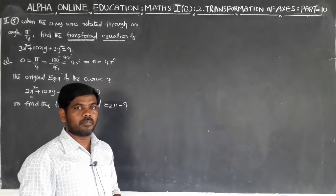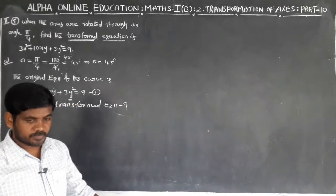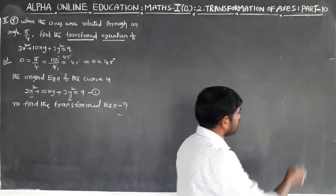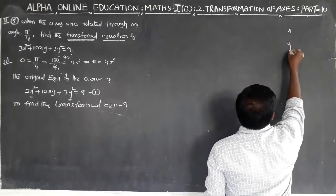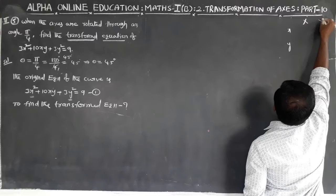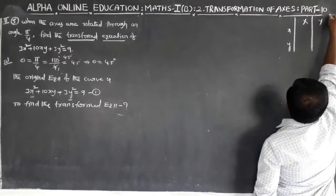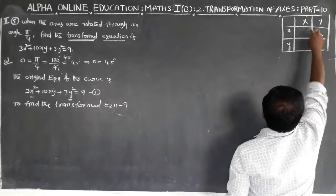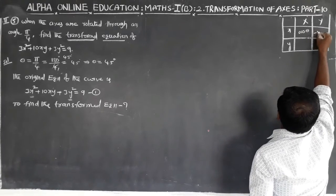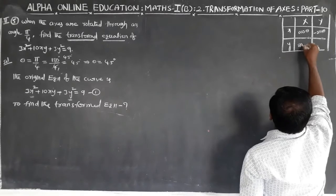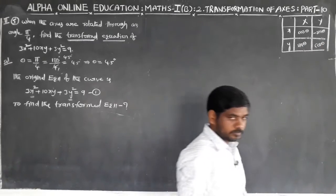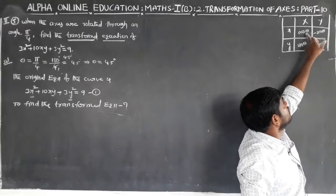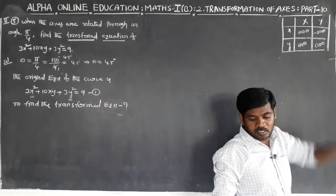This is the problem on the formula for rotation of axis. Rotation of axis changes the coordinates. On the left side we have small x, small y; on the right side, capital X and capital Y. The transformation is: small x = X cos θ − Y sin θ, and small y = X sin θ + Y cos θ.